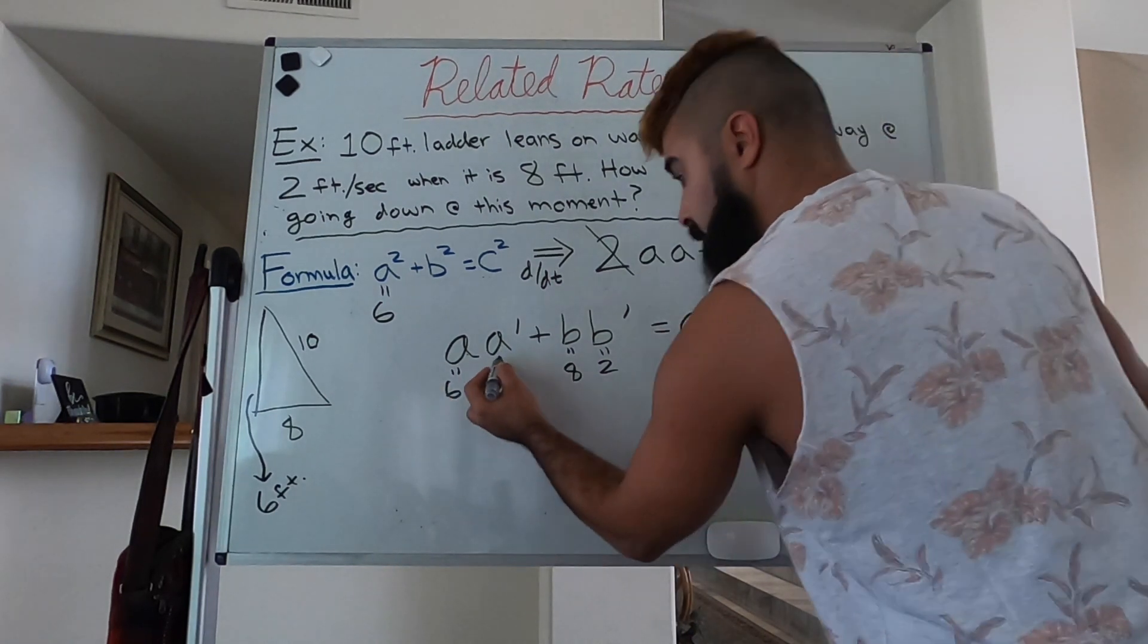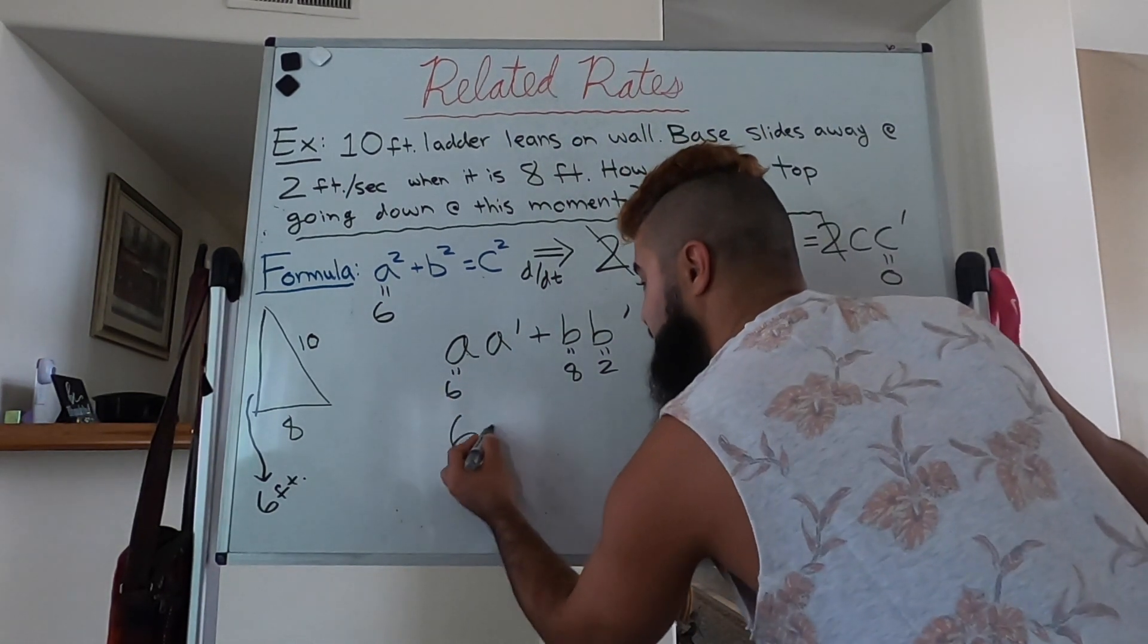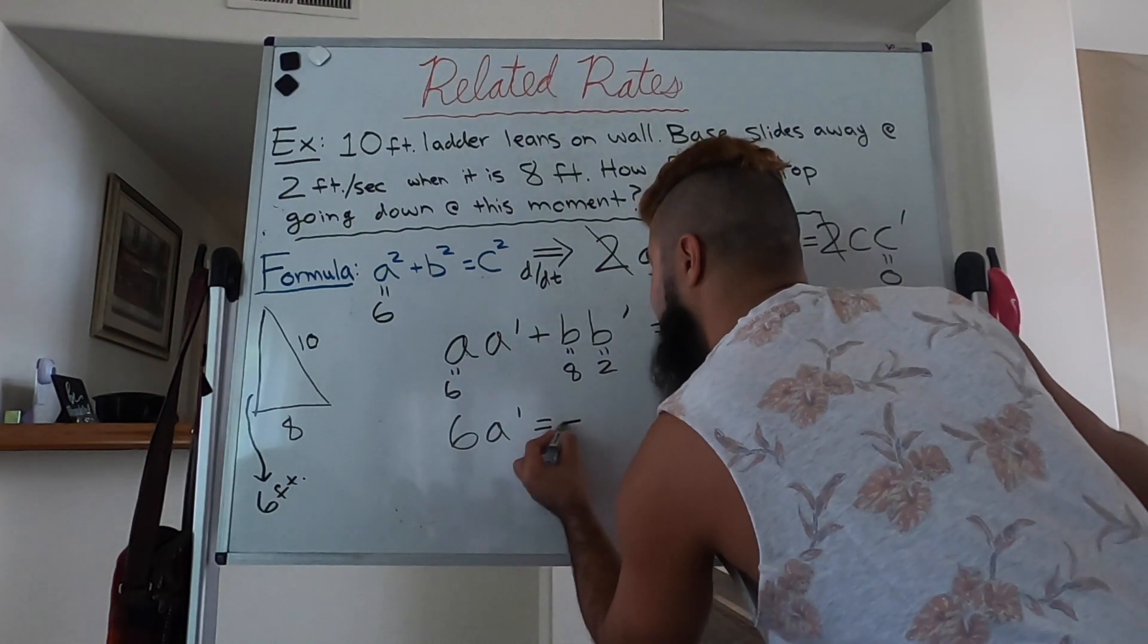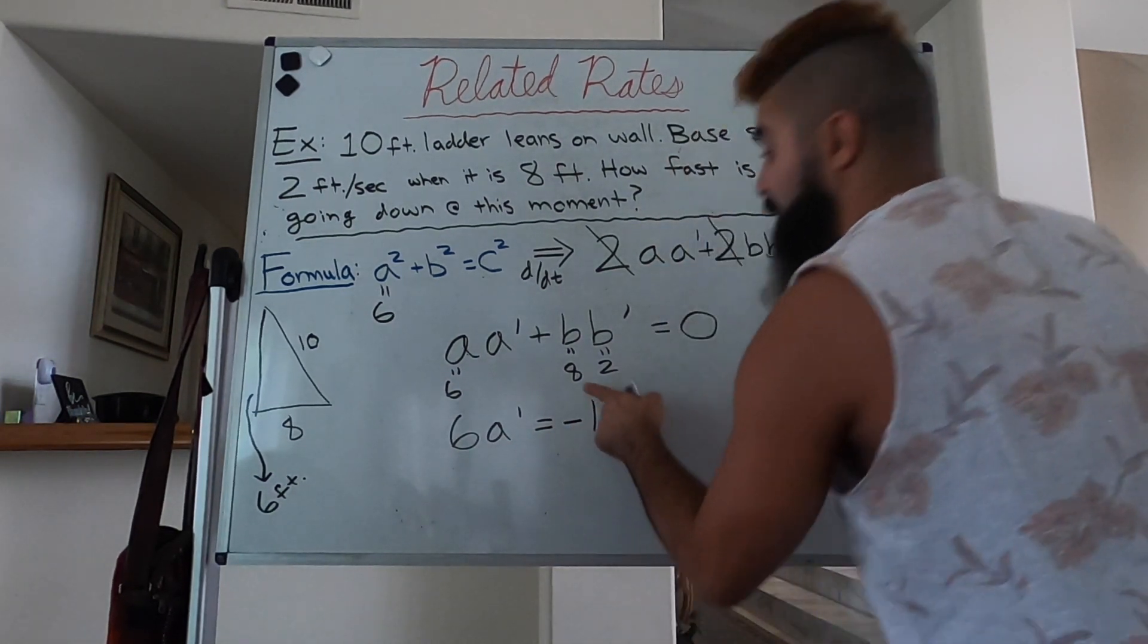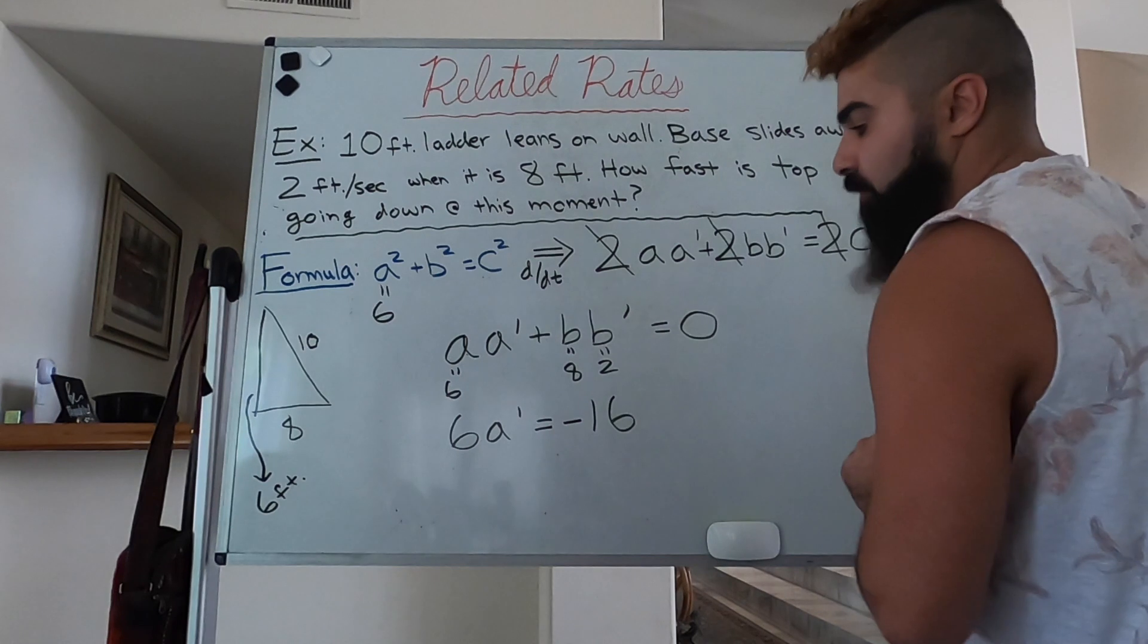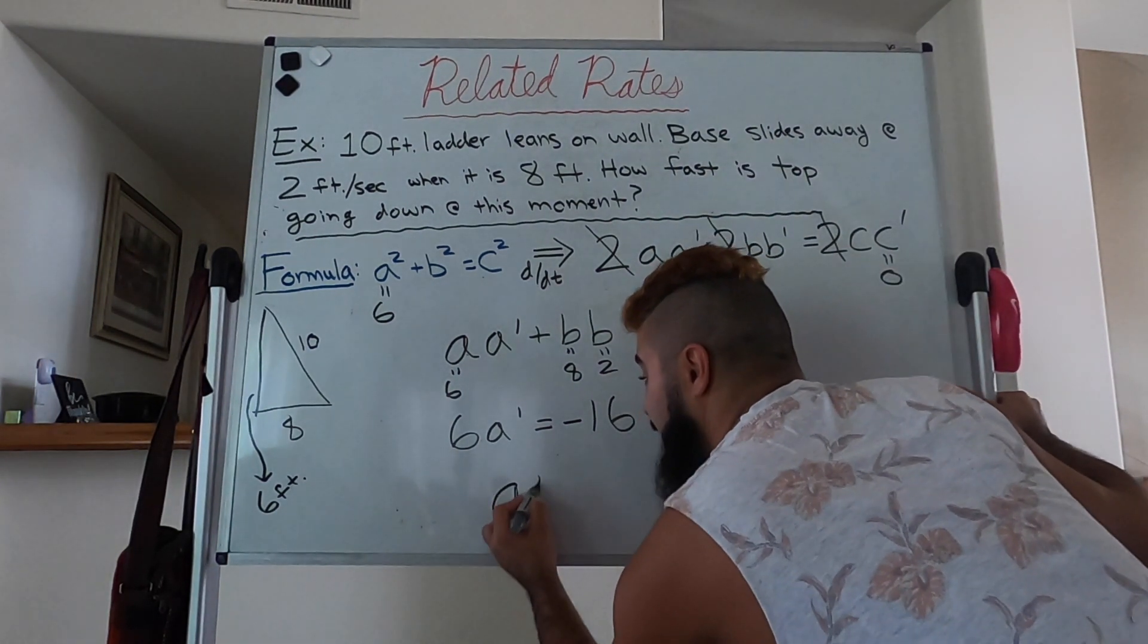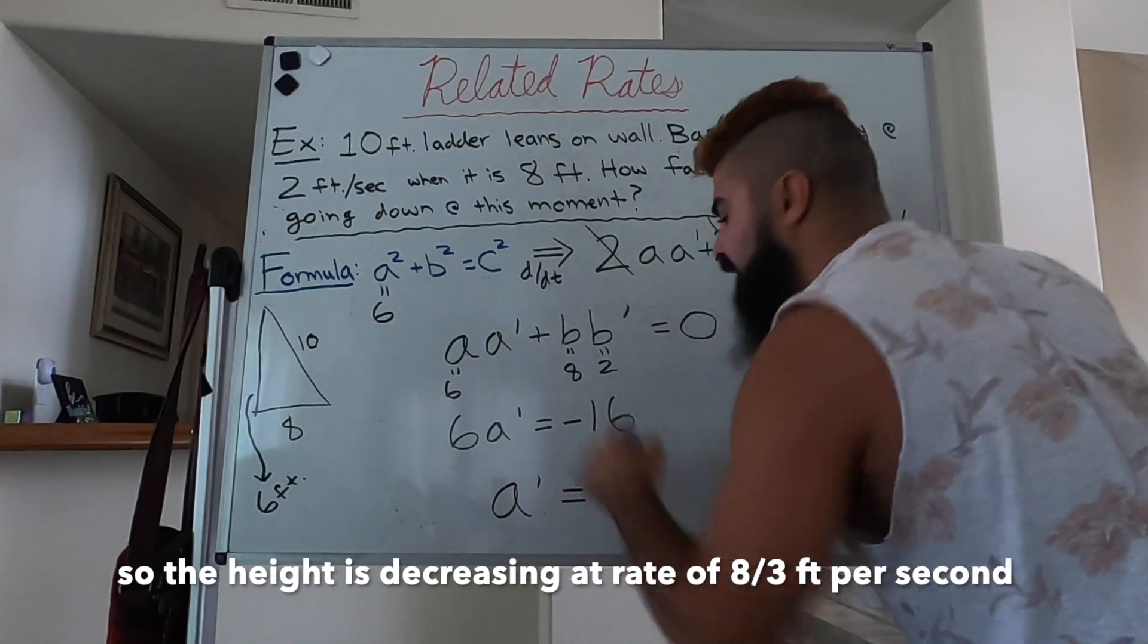6a' is equal to -16, because 8 times 2 is 16. Bringing it over, dividing both sides by 6, so the height of the ladder is moving down at a rate of 8/3 feet per second. That's the rate at which the height is decreasing.